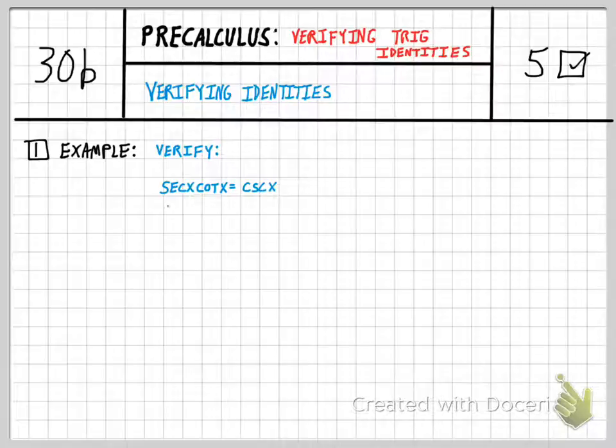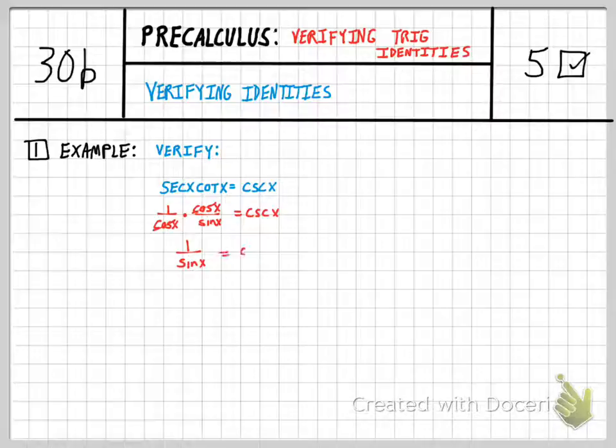So for example, we know that secant is the reciprocal of the cosine function, and that's something we can take advantage of. We also know that cotangent is the cosine of x over the sine of x. And so by using those two identities, I want to see what happens. And basically almost right away you see that the cosines cancel, and you end up with one over sine of x.